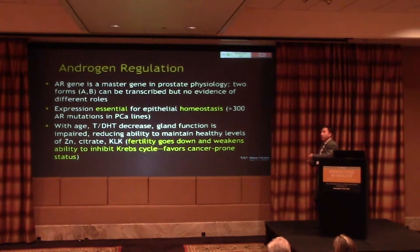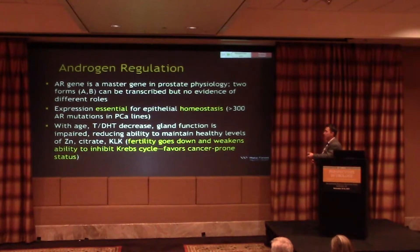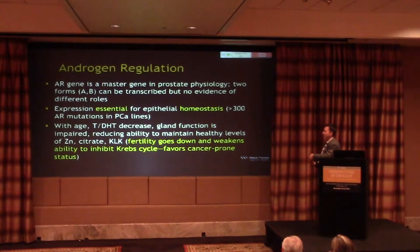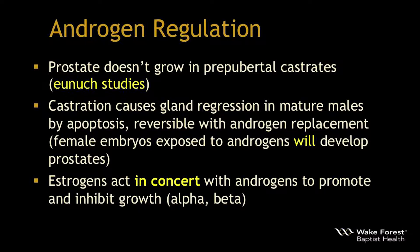As men age, testosterone and therefore dihydrotestosterone levels decline. Gland function is impaired, reducing the ability to maintain healthy levels of zinc, citrate, and kallikreins. Fertility declines in many men, and this weakens the ability to inhibit the Krebs cycle, which then favors a cancer-prone status. Studies on eunuchs show that the prostate doesn't grow in their absence of androgens, and castration in mature males causes gland regression mainly through apoptosis — reversible with androgen replacement.